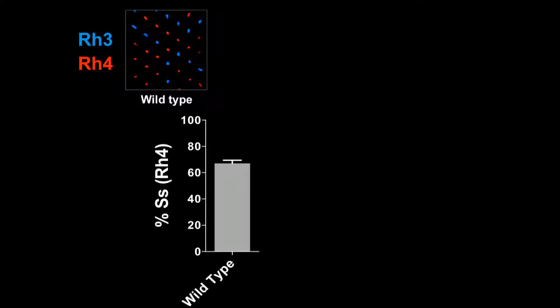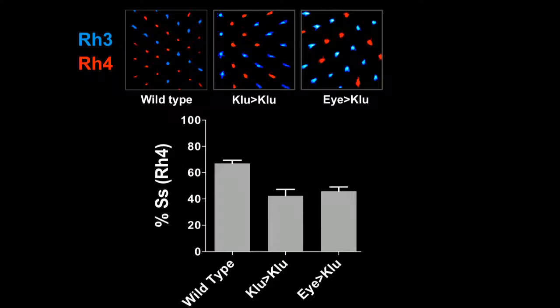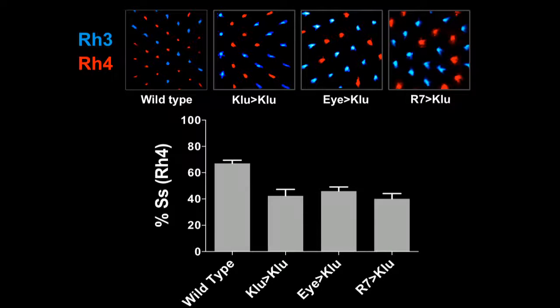Next we wanted to see what would happen if we overexpressed clue, and we did this in three ways, with clue driving clue itself, a general eye driver driving clue, and an R7 specific driver driving clue. In every case, we saw a significant decrease in the spineless on-off ratio. This suggests to us that clue is a repressor of spineless that binds better in the presence of the low spineless SNP.